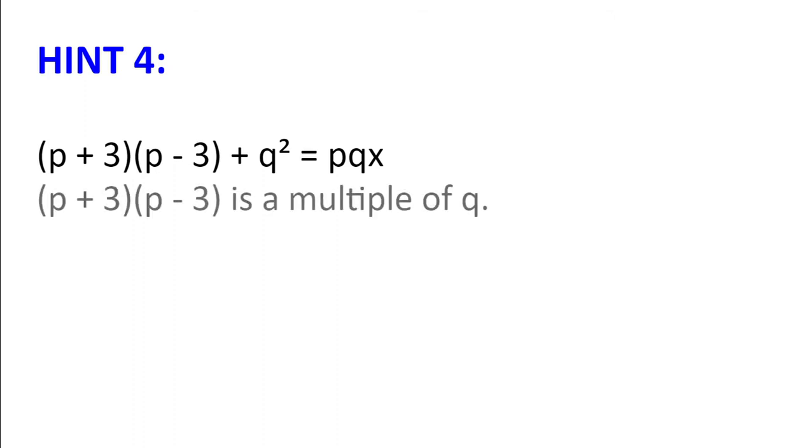Hint number 4. So we have p plus 3 multiplied by p minus 3 plus q squared equals pqx. And since pqx is a multiple of q and q squared is a multiple of q, p plus 3 multiplied by p minus 3 is also a multiple of q.